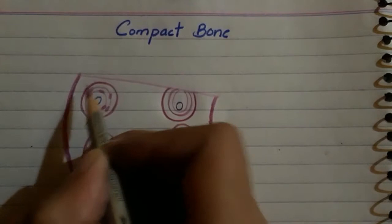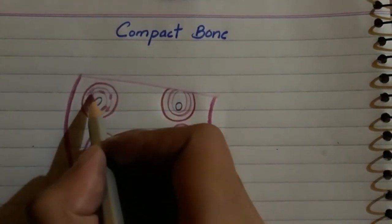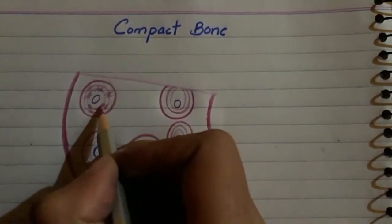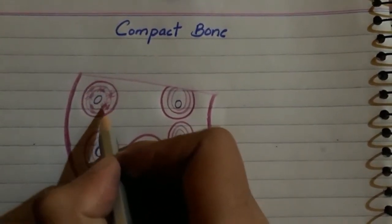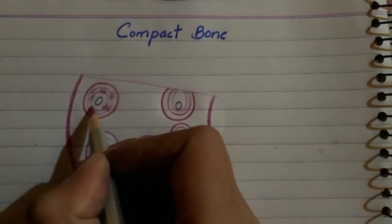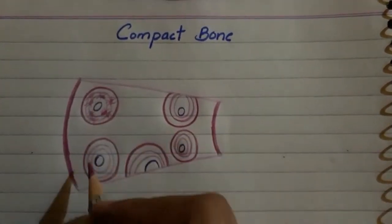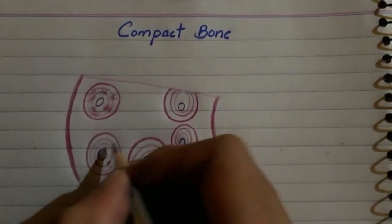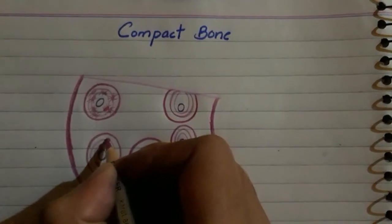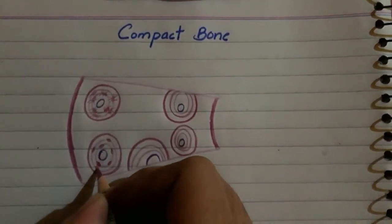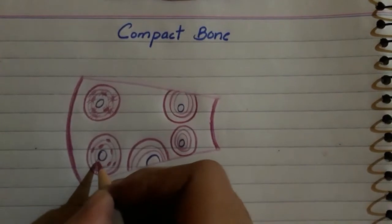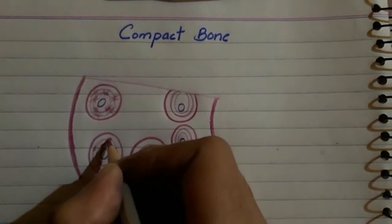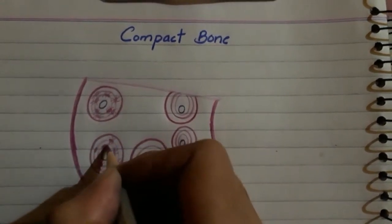And we have some lines, basically we have made osteons with lines and pink color ovals and lines.